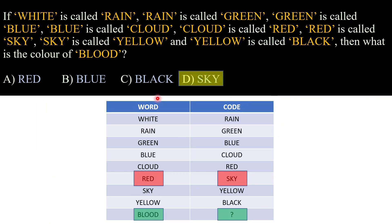Students, note that option C 'black' is also given, so while marking the answer we have to see only the code for red. We don't follow the chain further — sky is coded as yellow, yellow is coded as black — we stop at the first substitution. The code for red is sky, so we mark option D: sky.